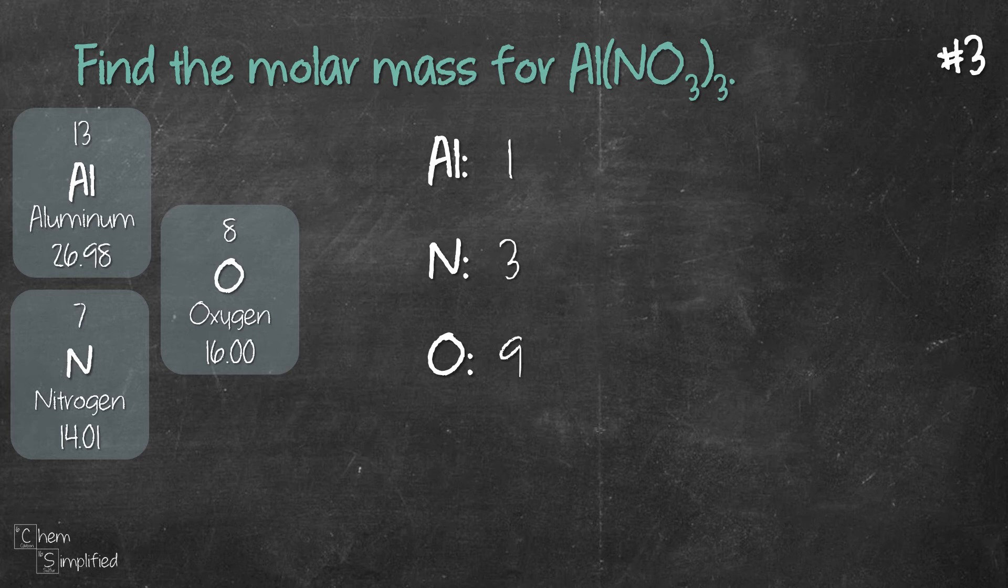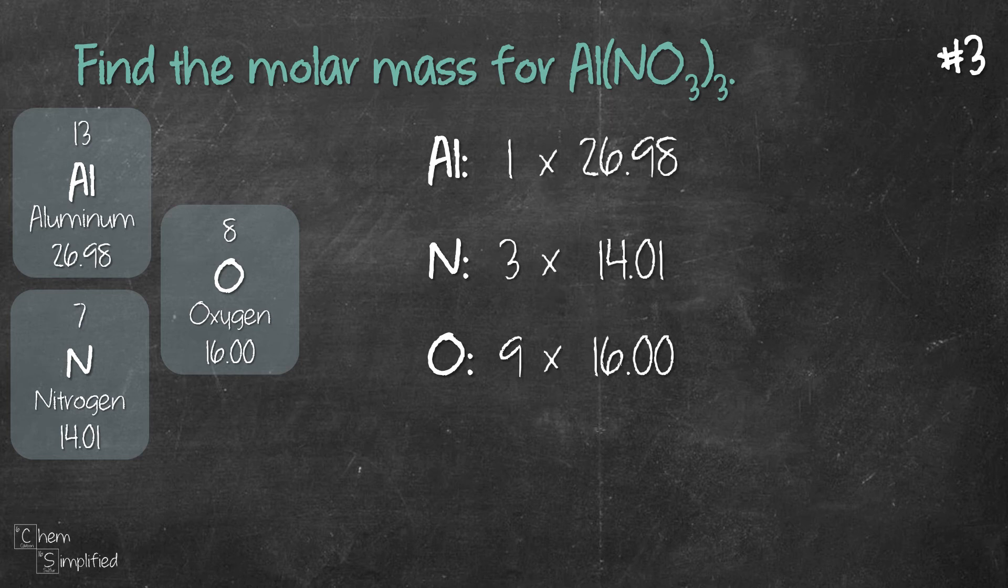If you want to review on how to count atoms, I'll link up the video on the top right corner. So we get their atomic mass from the periodic table and we multiply them and here's what we get.